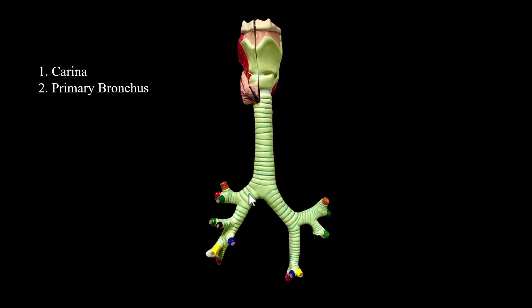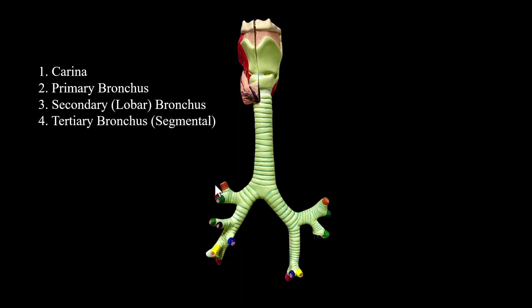We have our primary bronchi. Bronchus is singular; bronchi is plural. The bronchus on the right is going to be wider and shorter, whereas it's going to be more narrow and longer on the left. After the primaries, we have our secondary or lobar bronchi. Then the colored segments are going to be our tertiary bronchi, also known as segmental bronchi. For more information on naming those, there is a separate video available on the channel.